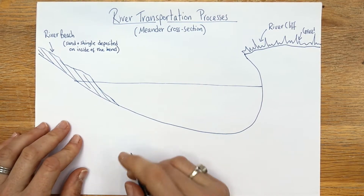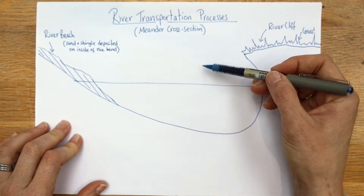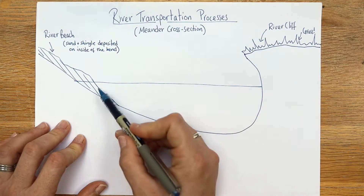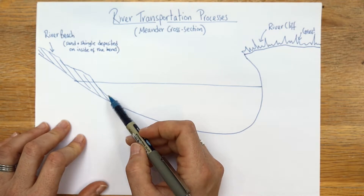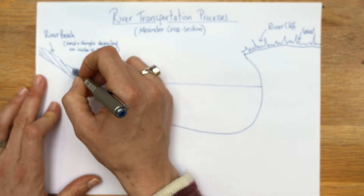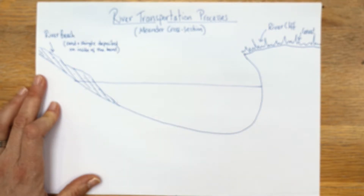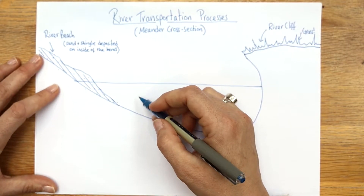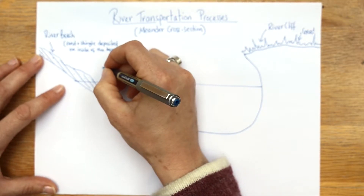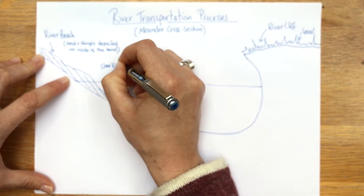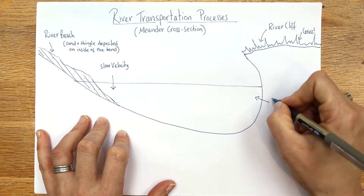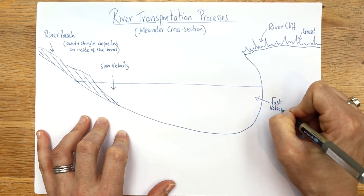You should know why material is being deposited here on the inside of the bend - it's all to do with the velocity of the river. The river moving around this corner is going to be going faster on the outside and slower on the inside. Because it's slow, it can't carry material as well - it hasn't got as much energy - so it's going to deposit it. Add an arrow for slow velocity on this side and fast velocity on the other side.